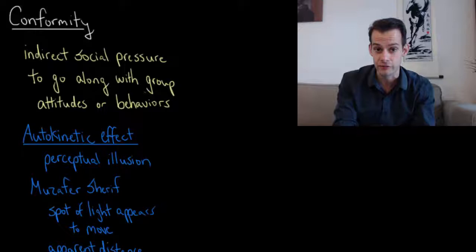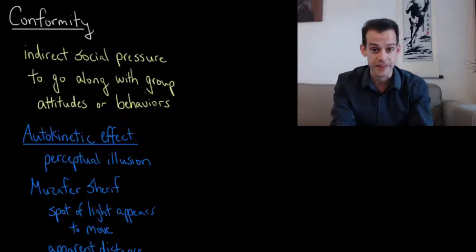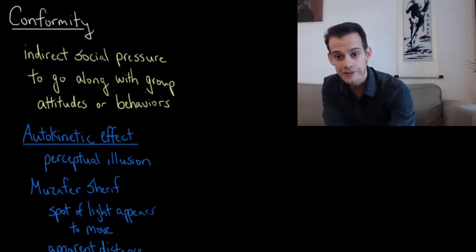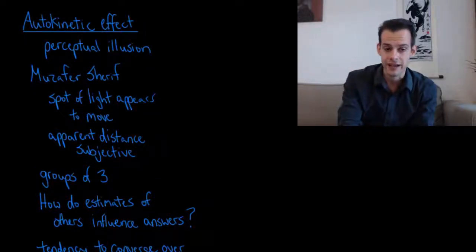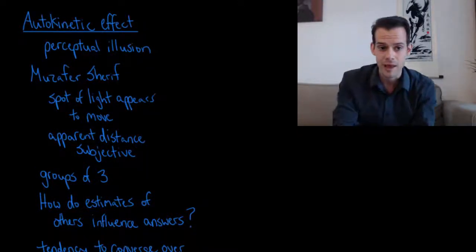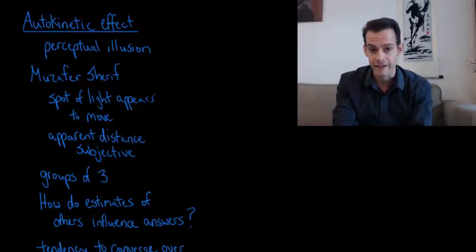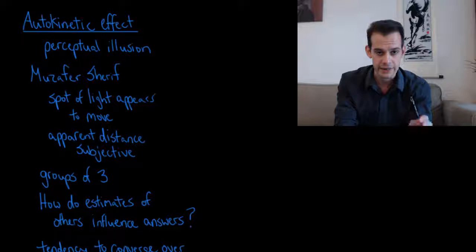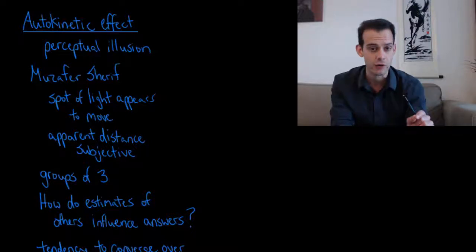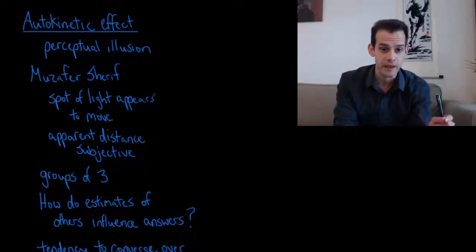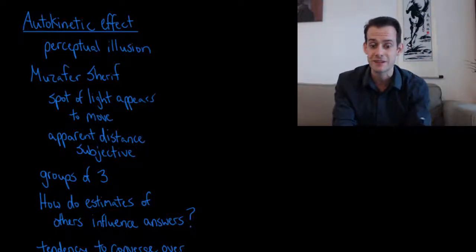Now one of the earliest studies of conformity was done by Muzafer Sherif in the 1930s. And Sherif took advantage of a perceptual illusion called the autokinetic effect. And he used this to investigate conformity. Because this autokinetic effect is the idea that if you're in a dark room and you look at a small spot of light, the spot of light will appear to move. And how much it moves is subjective. Some people will report that it only moves an inch or two. Others might report it moving as much as a foot.